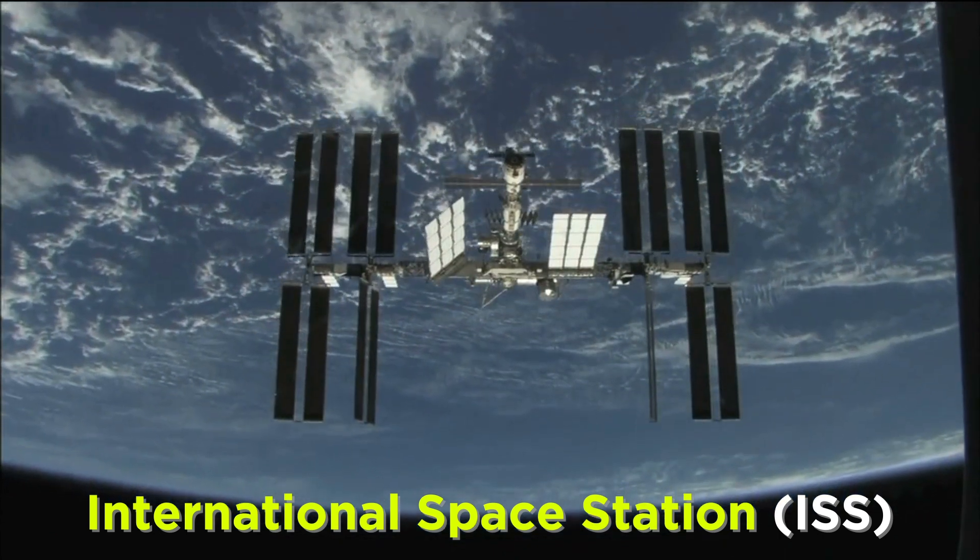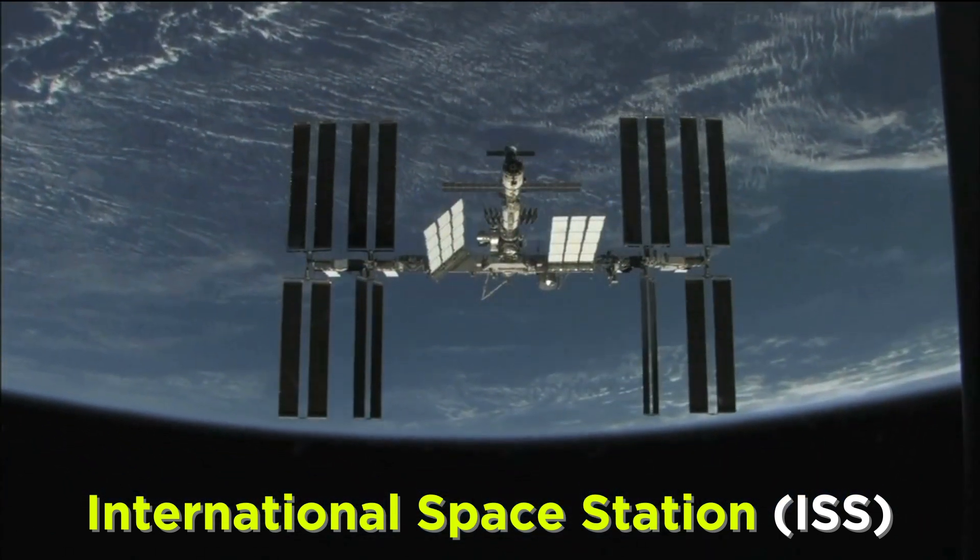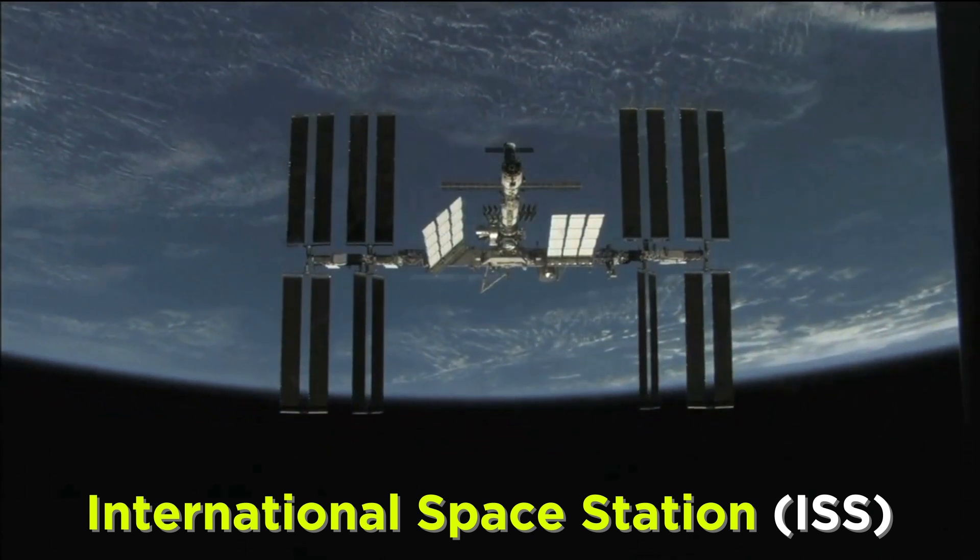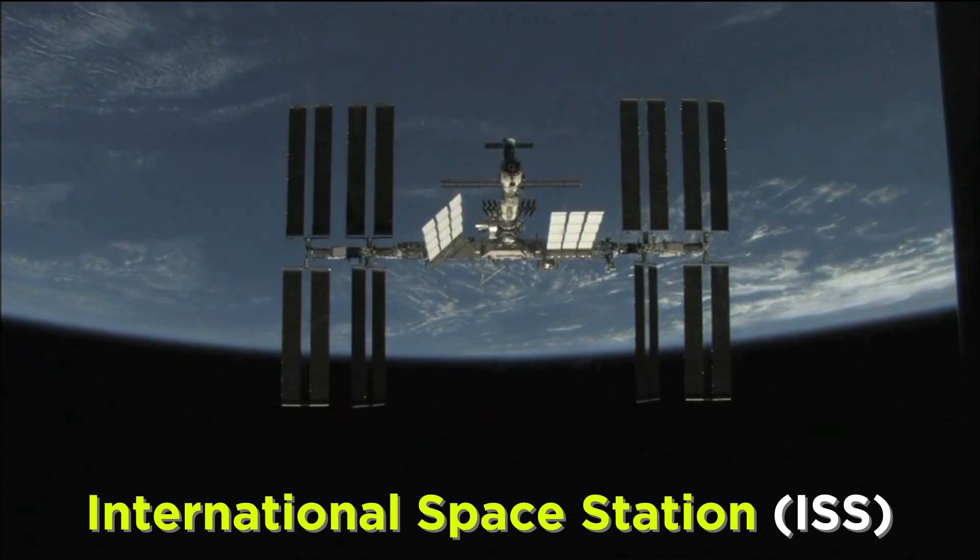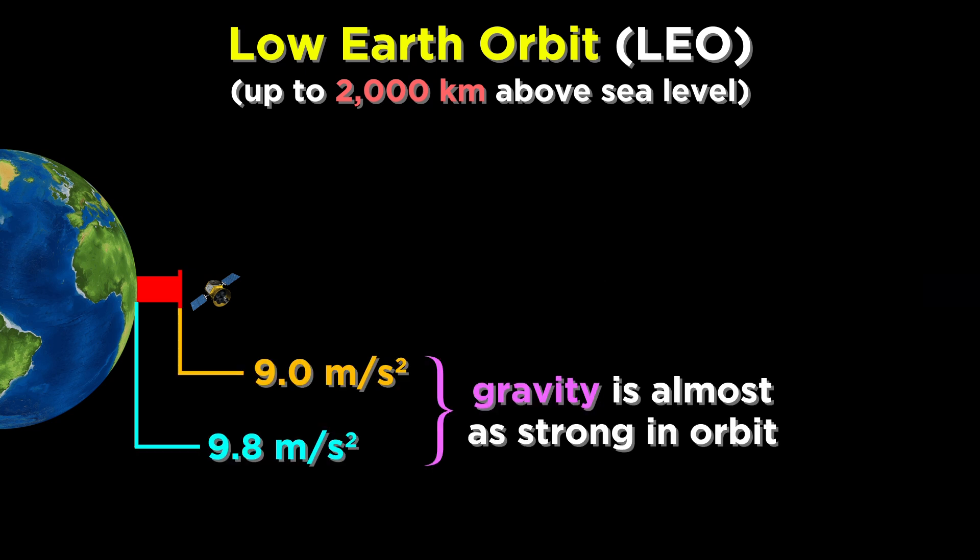This is where the International Space Station is, so except for the humans that have been to the moon, all the manned spaceflight that has happened so far has been in low Earth orbit. So how do these objects stay up there instead of falling to the Earth? It's not because there's no gravity. In truth, gravity is almost as strong in low Earth orbit as it is on the surface of the Earth.